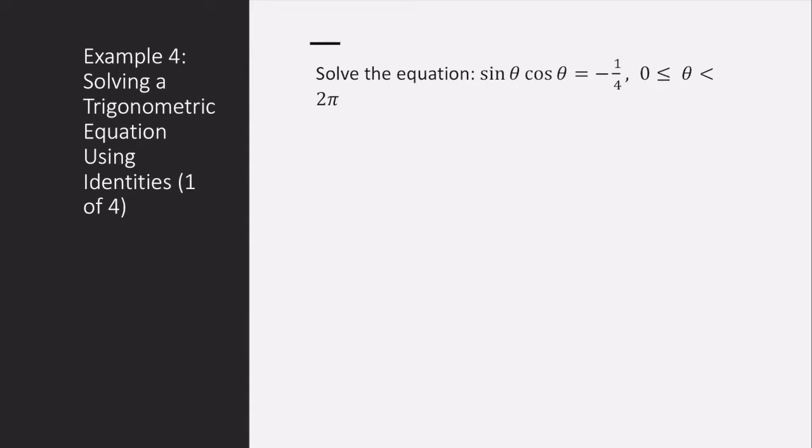We need to make this sine theta cosine theta look like something we have seen before. And we know that two sine theta cosine theta is sine of two theta. So what we need to do in order to get this to look like this is multiply by a factor of two.